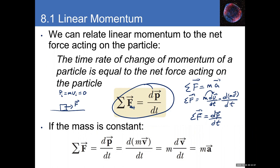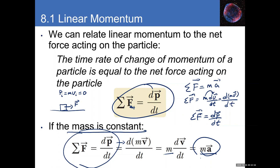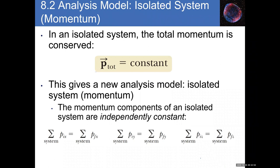Using F_net = dp/dt and assuming constant mass, we recover d(mv)/dt = m times dv/dt = ma. So F = ma is a special case used for convenience when mass is constant. Newton originally wrote his second law in terms of momentum: if an object is at rest it has no momentum, you push it and momentum changes — the force was responsible for that change.